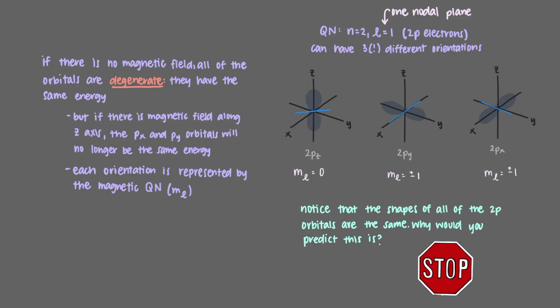Notice that the shapes of all of the 2P orbitals are the same. Why would you predict this is? It is the azimuthal quantum number l that tells us about the shape of the orbital. Because l is the same for all of the 2P orbitals, they all have the same shape.